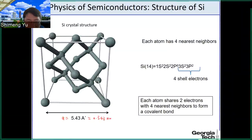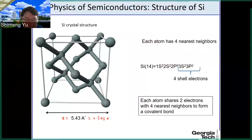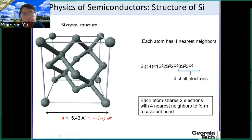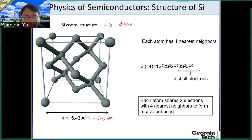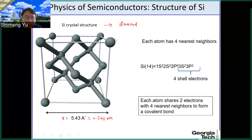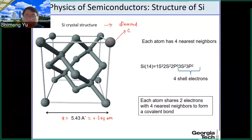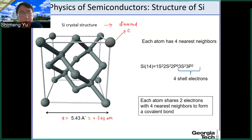One Ångström is one-tenth of a nanometer, so the lattice constant is 0.543 nanometers. This silicon crystal structure has another name: it's the same as the diamond structure. If you replace the silicon atoms here with carbon, you get diamond.